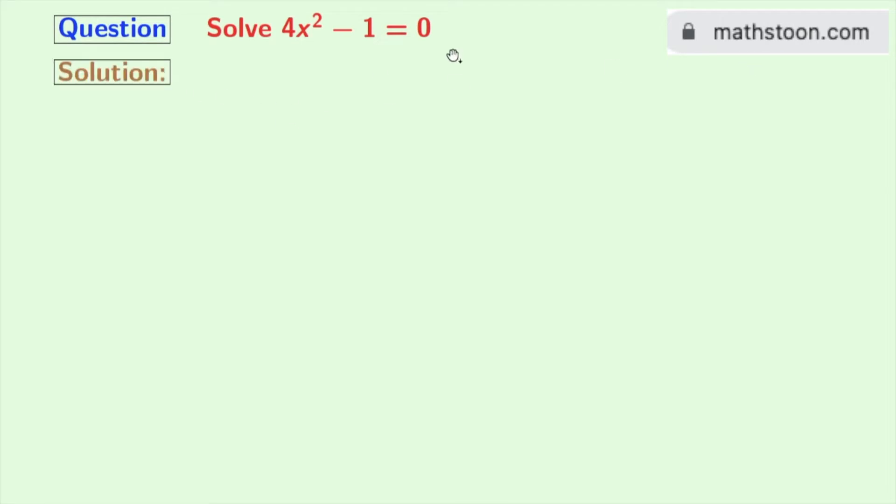Now let's start. We will solve this equation using the factorization method. Our given equation is 4x² - 1 = 0.